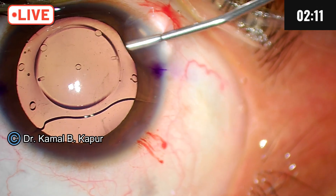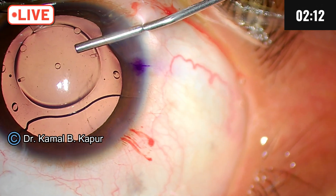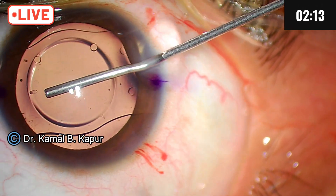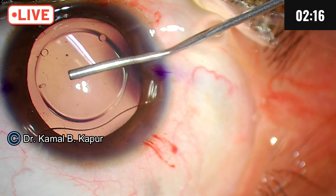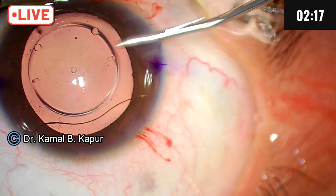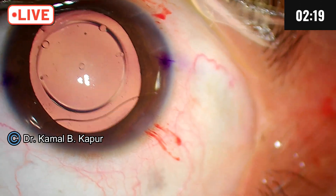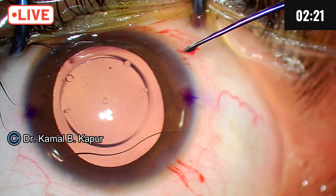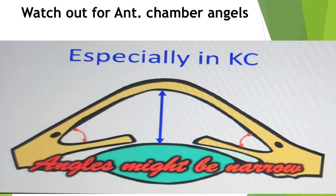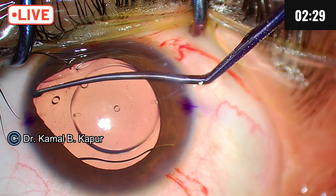When you're planning a toric IPCL, especially in keratoconus, it's a good idea to plan a slightly higher vault. The caveat here is that in keratoconus patients you may get an abnormally high anterior chamber depth, which will be a false reading — that is because of the keratoconus.